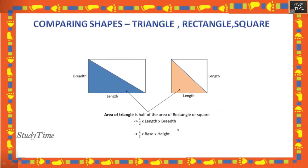Next: comparing shapes — triangle, rectangle, and square. A rectangle has opposite sides equal; a square has all sides equal. When you want to find the area of a triangle, it can be derived from a rectangle or square: area of triangle = half × length × breadth, or half × base × height.